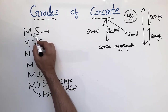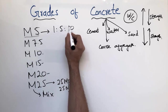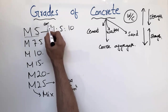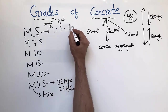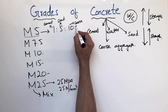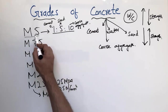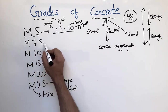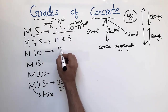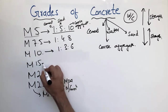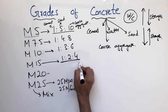For nominal mix design, there is a specific ratio for each grade. The ratio represents cement : fine aggregate (sand) : coarse aggregate. For M5, we use 1:5:10; for M7.5, we use 1:4:8; for M10, we use a corresponding ratio; and for M15, we use 1:2:4. M15 with ratio 1:2:4 is the most common one used for normal buildings.